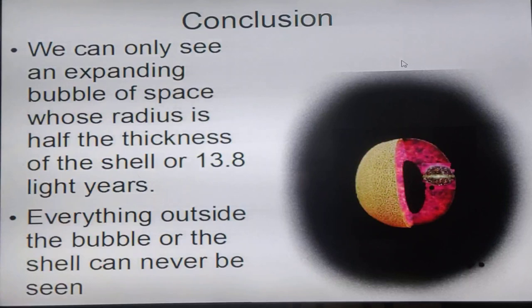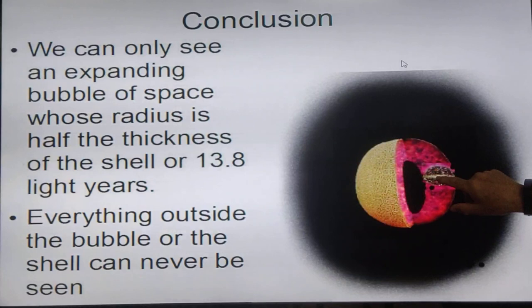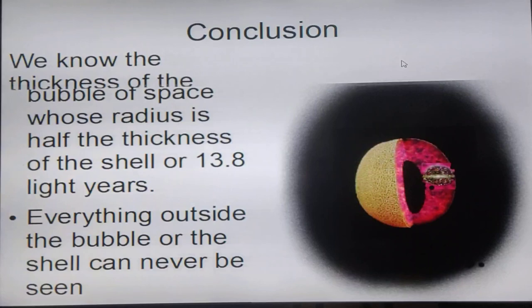From my perspective, from inside the Earth, we can only see an expanding bubble of space that has a radius which is half the thickness of the shell, or 13.8 light years. So basically, what we're seeing is, this is our universe right here, that's what we see. The entire universe is this whole piece here, but we can only see this part here, which is 13.8 light years from center to the edge. We can't see anything outside our bubble.